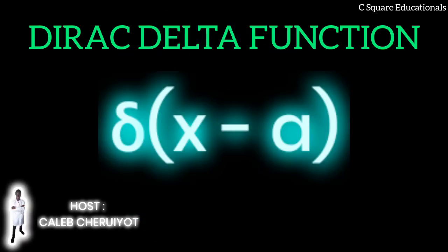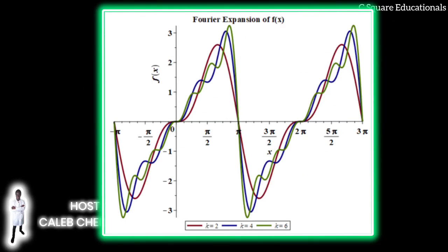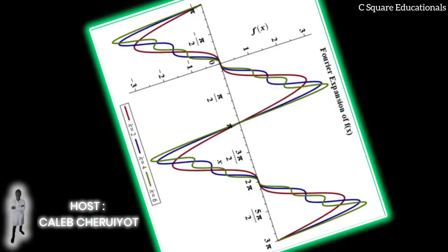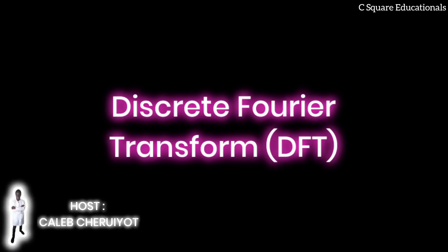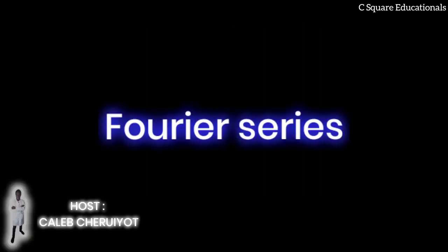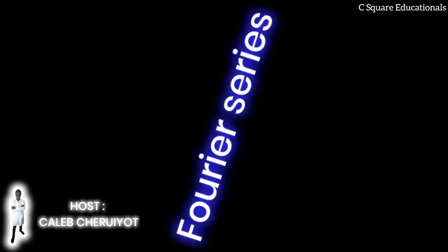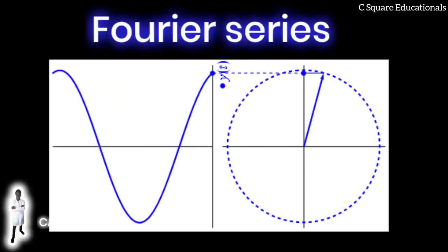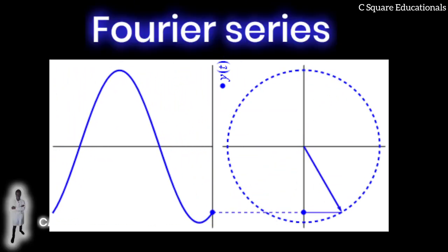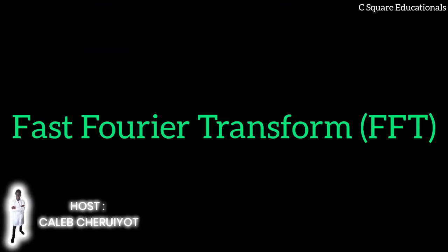Still further generalization is possible to functions on groups, which — besides the original Fourier transform on ℝ or ℝⁿ (treated as groups under addition) — notably includes the discrete-time Fourier transform (DTFT), the group ℤ mod N, and the Fourier series or circular Fourier transform. The latter is routinely employed to handle periodic functions. The fast Fourier transform (FFT) is an algorithm for computing the DFT.